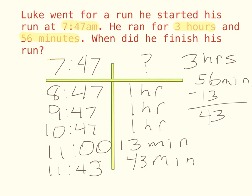Now a quick double check: let's make sure we have 1, 2, 3 hours — that matches the 3 hours. And 13 plus 43 gives me 56 minutes. So I know that when Luke started at 7:47 and ran for 3 hours and 56 minutes, he is going to finish at 11:43 AM. And that's how we use the t-chart to find the end time when elapsed time and start time are given.